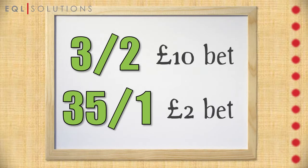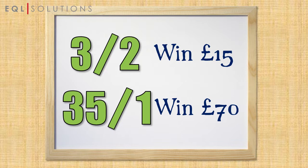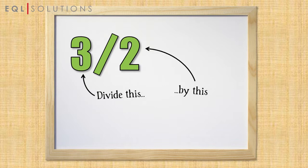See if you can work out the winnings from these odds. Did you get it? Well done if you did. Remember to always divide the first number by the second to get a decimal, before multiplying that by the stake to work out your winnings.